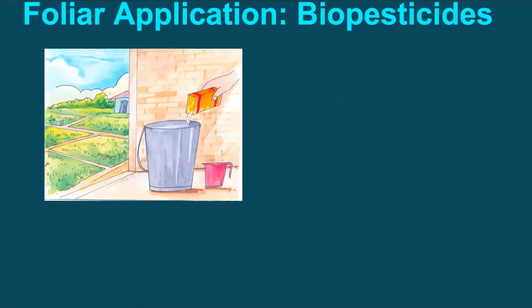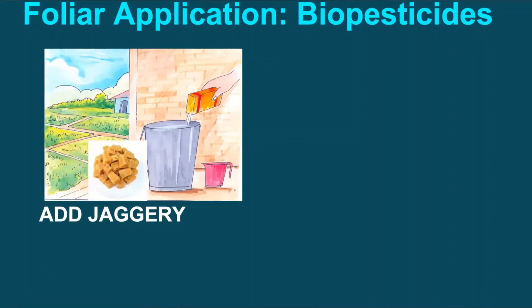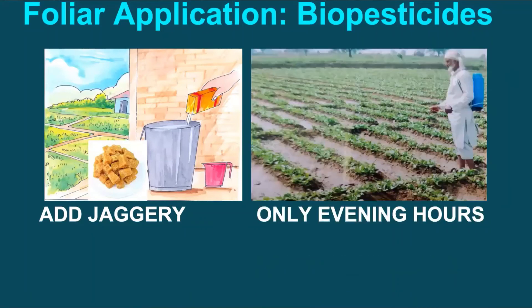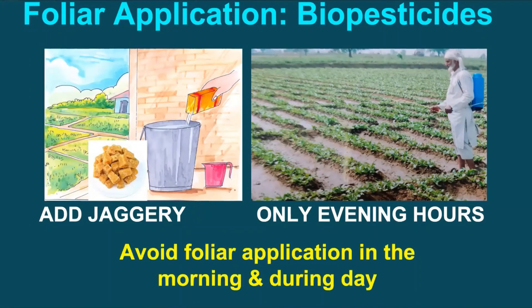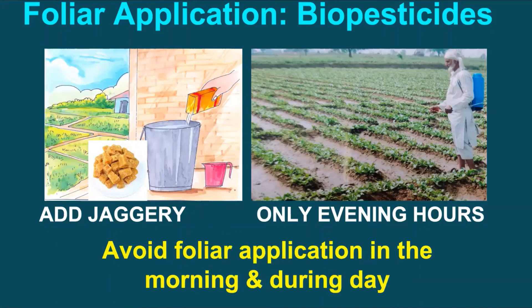For foliar application, add some jaggery — around 500 grams per acre — in the spray solution, and spray should be done only in the evening hours. This is because jaggery provides initial food to the microbe, while evening hours avoid direct exposure to high temperatures and allow extra hours overnight so that microbes can establish and multiply properly. Foliar application in the morning and during daytime adversely affects the efficacy of microbial biopesticides and therefore must be avoided compulsorily.